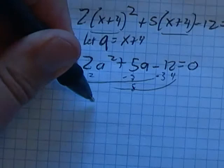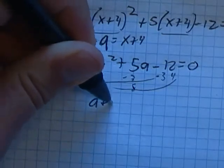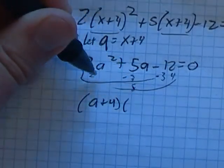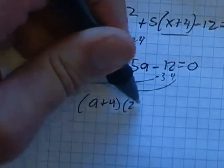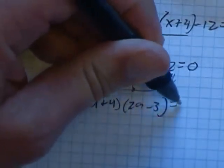So I could factor this to a plus four, and I want the two multiplied by the four, so 2a minus 3 equals zero.